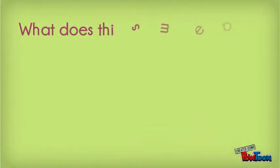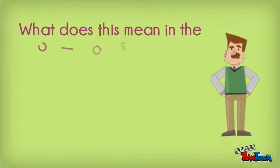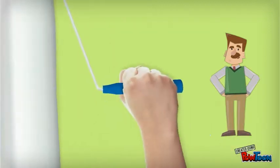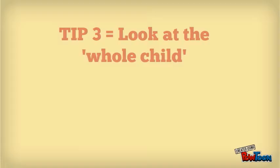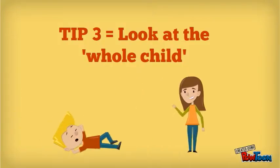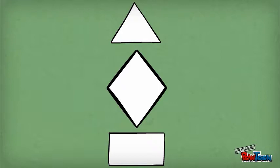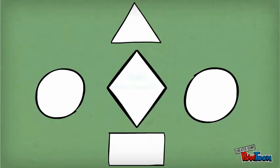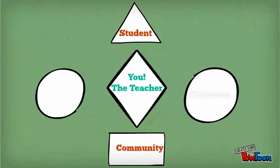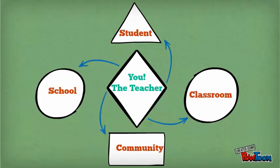But what does all this mean? What's the best approach? Let's start by looking at the whole child, which will help us to tie everything together. When looking at the whole child, you are working with all internal and external factors that make up and influence the child. This can be categorized into four categories.